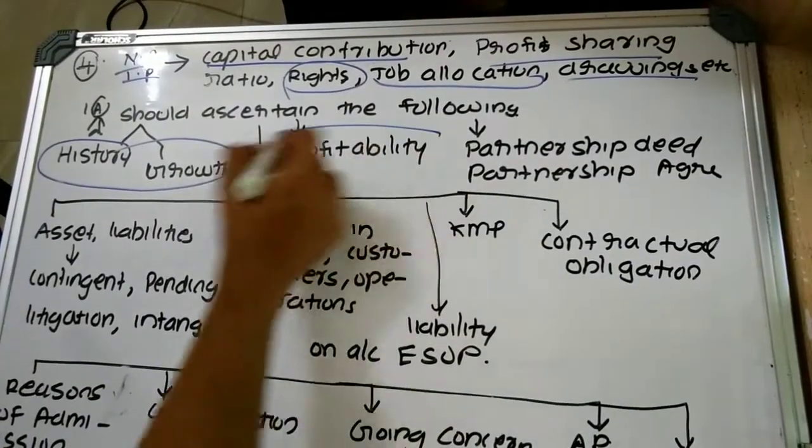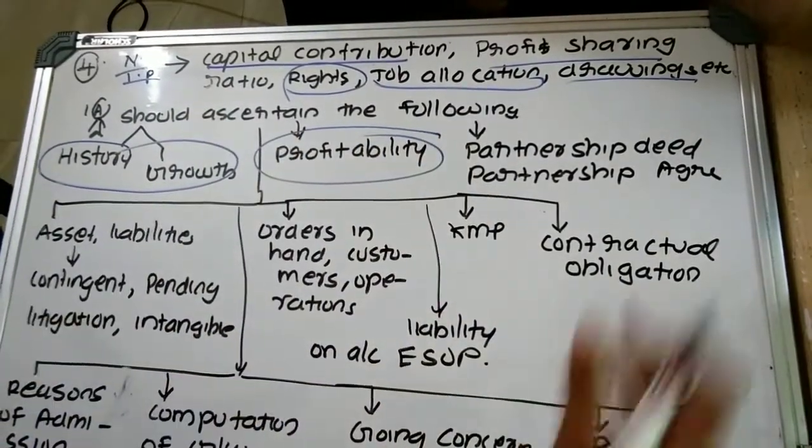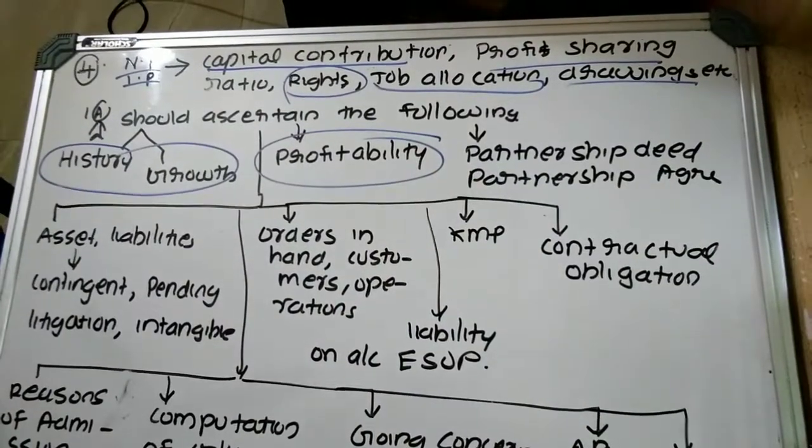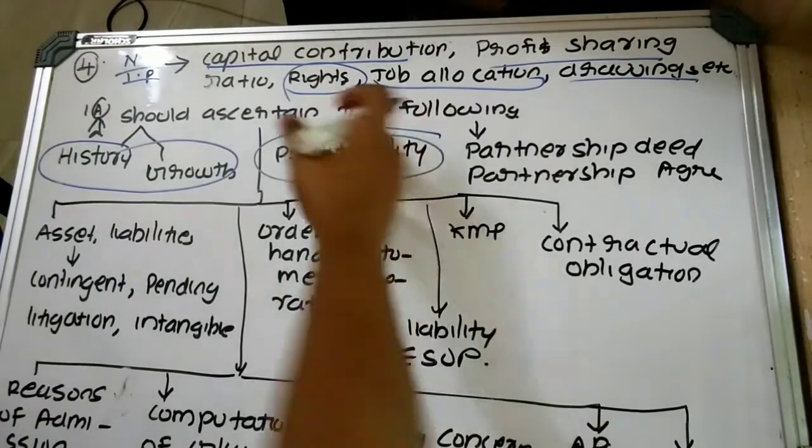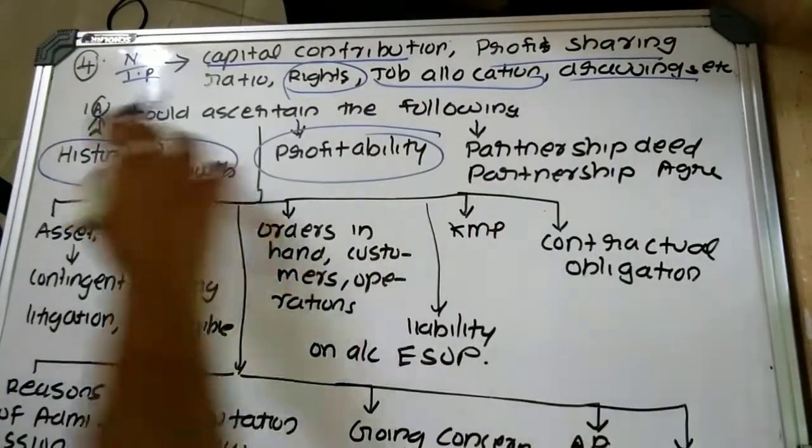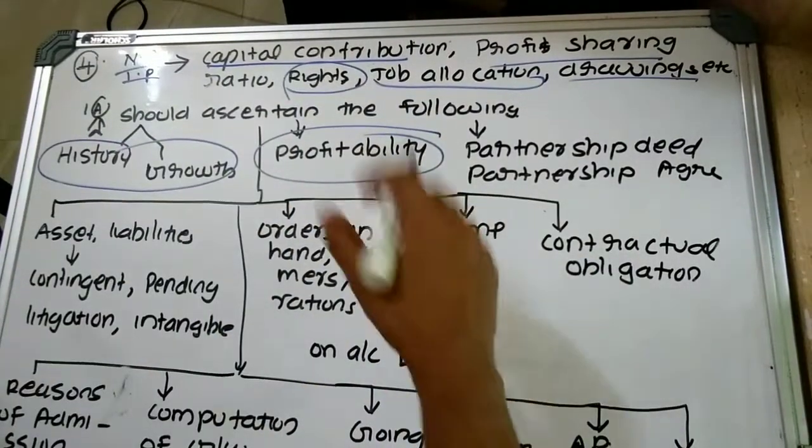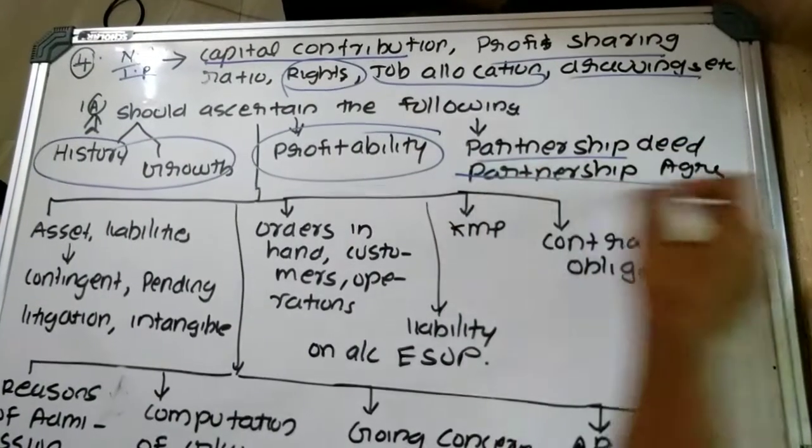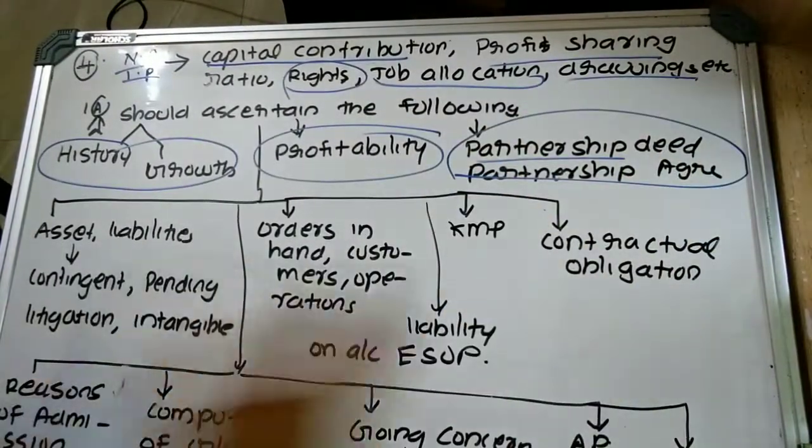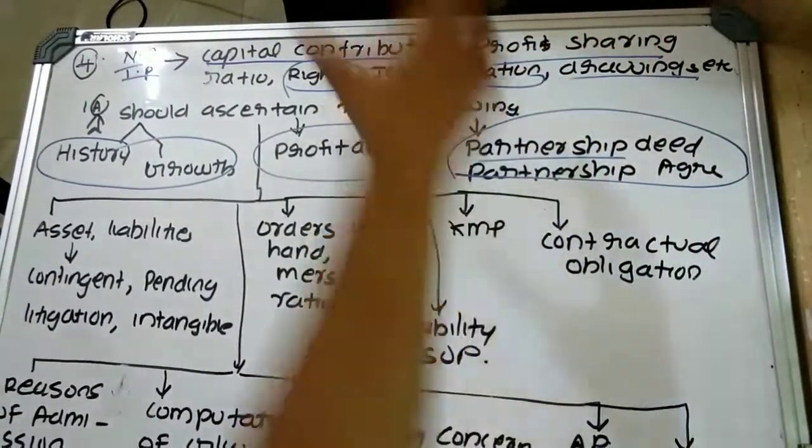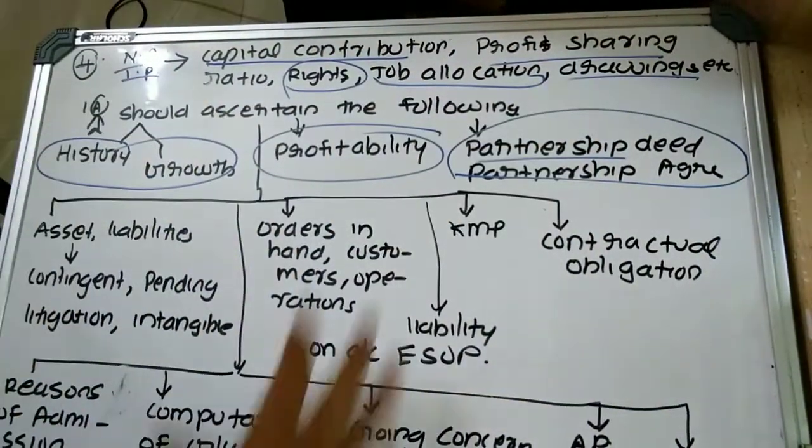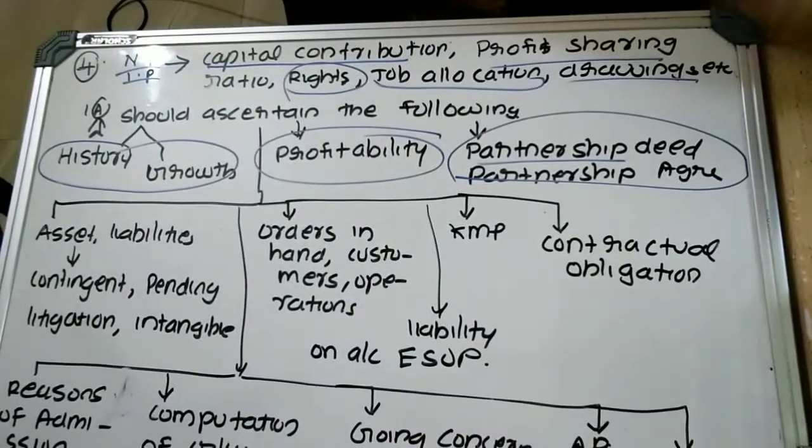They should examine profitability and determine whether there exist any extraordinary or exceptional items, income, or receipts in the profit and loss account. The investigating accountant is also required to examine the partnership deed or partnership agreement mainly for understanding matters like capital contribution, profit sharing, drawings, job allocation, and rights that will be allotted.